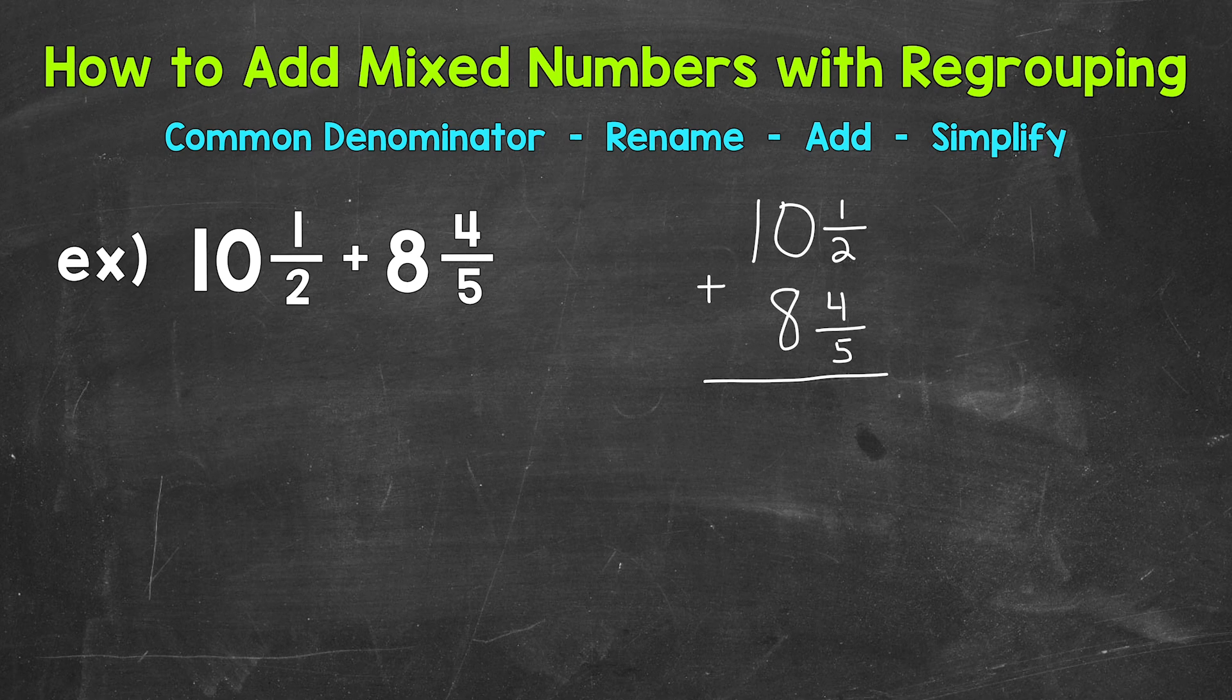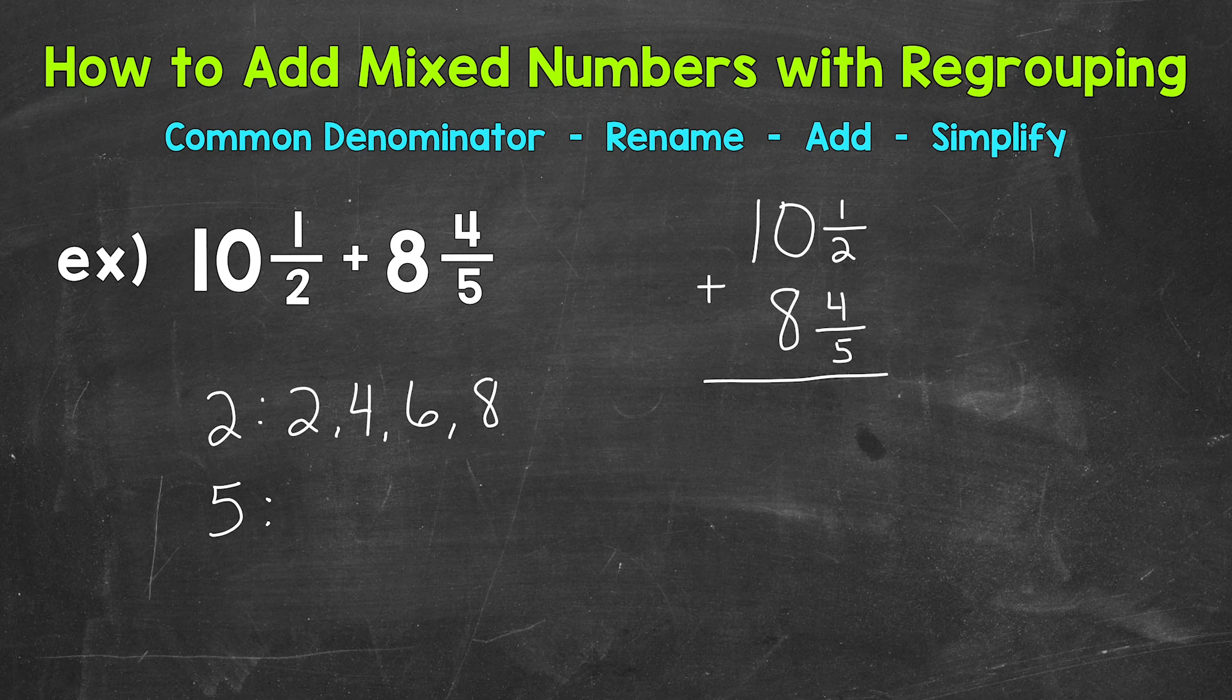So 2 and 5 here. Now multiples go on forever. So my suggestion, write 4 or 5 multiples of each number, see if you have any in common, and then you can go from there. If you need to extend your lists, that's fine. So let's start with 2, and we'll write out the first 4 multiples of 2. So 2, 4, 6, 8. Then we can write out 4 multiples of 5. So 5, 10, 15, 20.